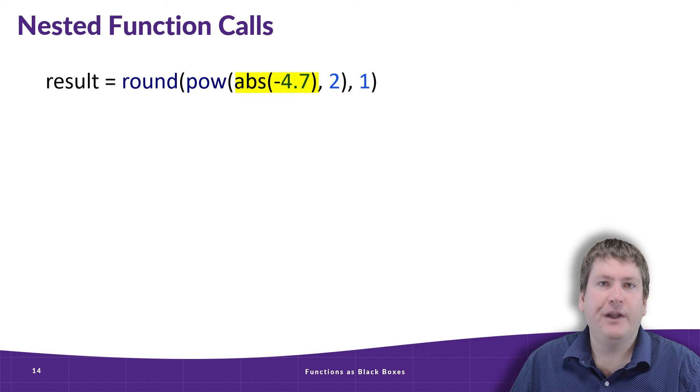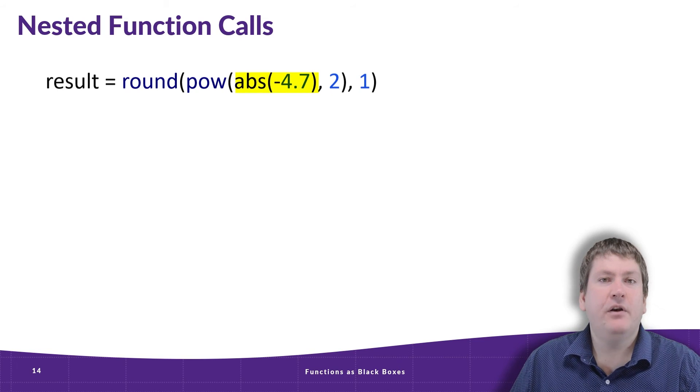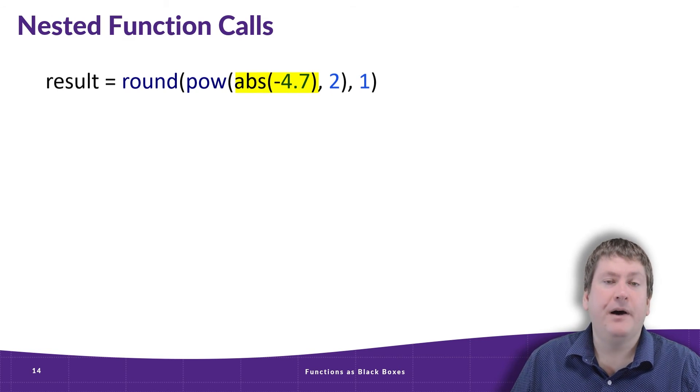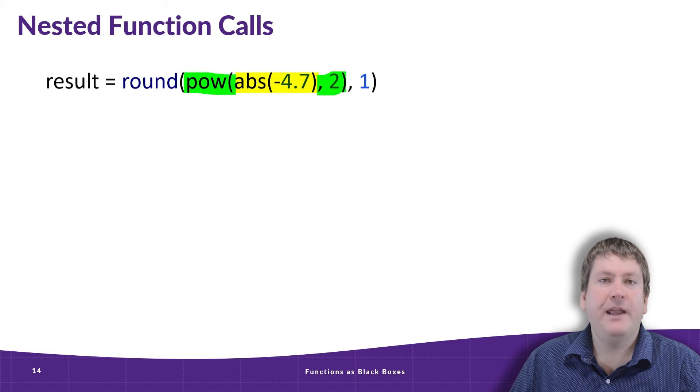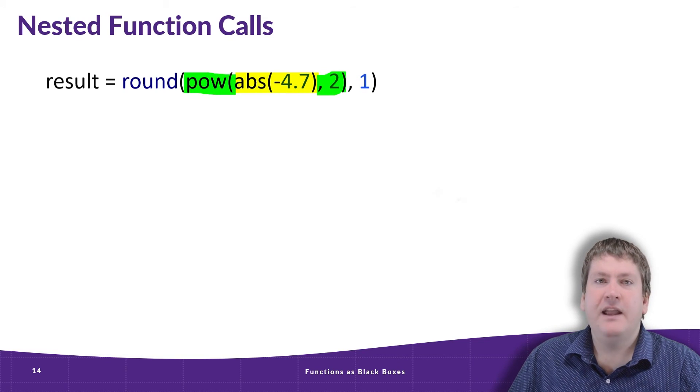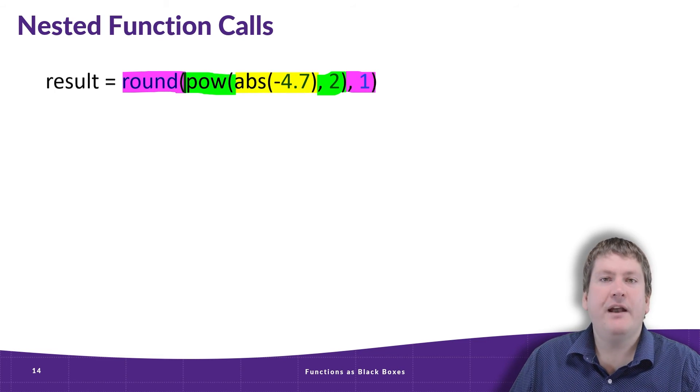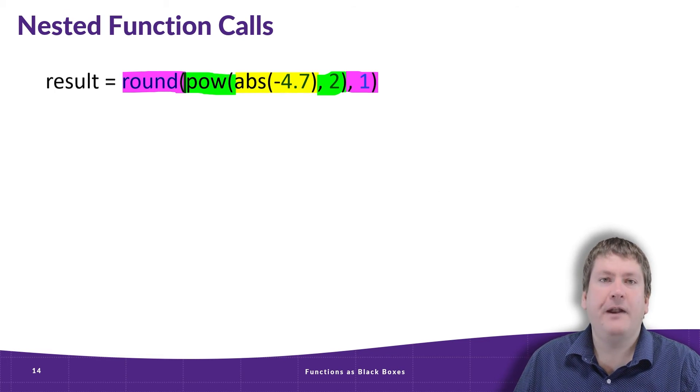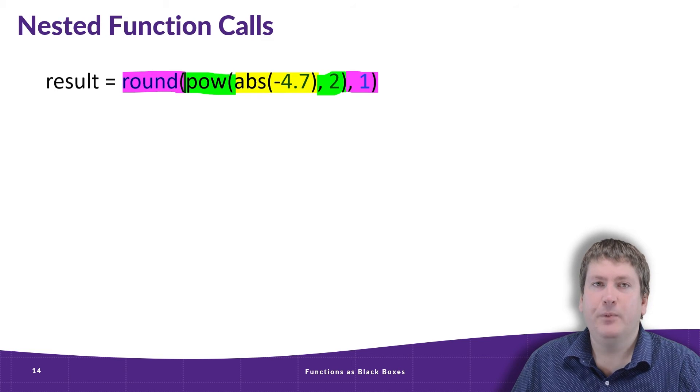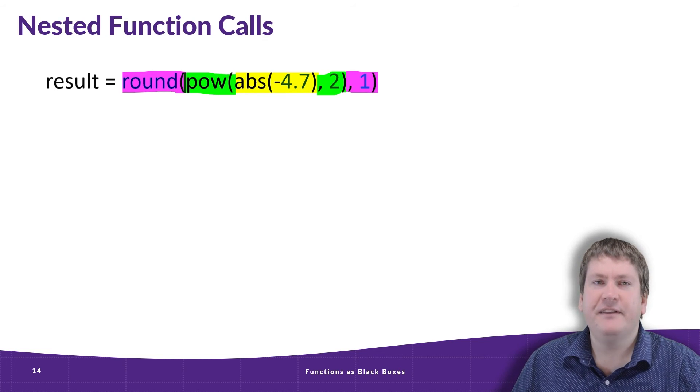So in the center here, we have the call to the absolute function, and we're sending it a value of negative 4.7. The absolute function will find the absolute value, which is the positive value. Now we have a call to the power function, and it's going to raise whatever that output from the absolute function is to the power of 2. And then we have a call to the round function, which is going to round that result to one decimal point. Let's take a closer look and see how this works.